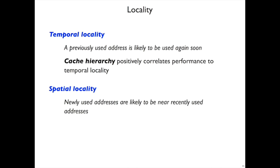Spatial locality refers to the phenomenon where a program that uses some data is likely to use some other data that's close by to that first bit in memory. And in that case, blocking is the feature of the cache system that positively correlates performance to the spatial locality.